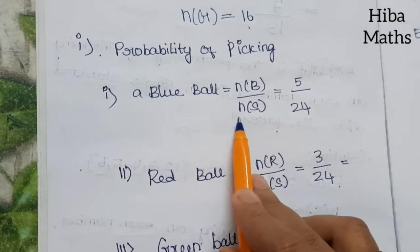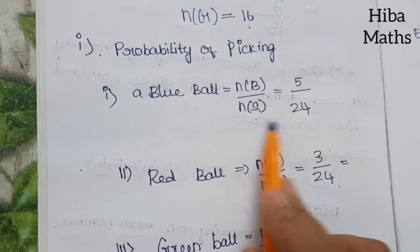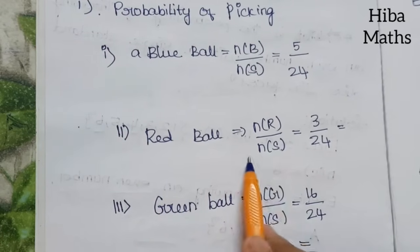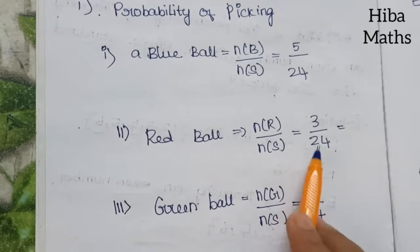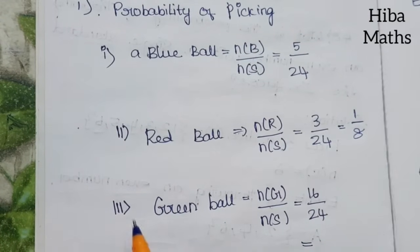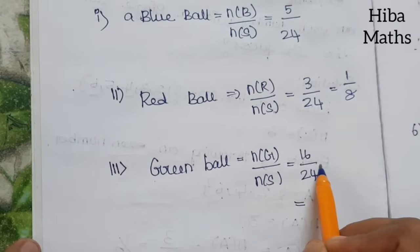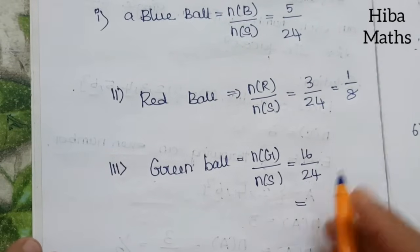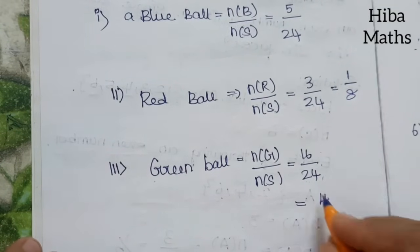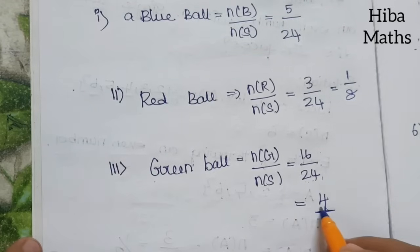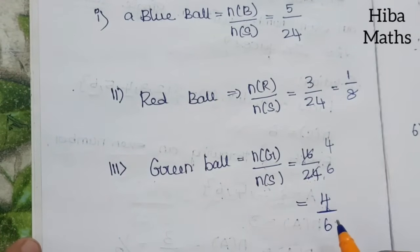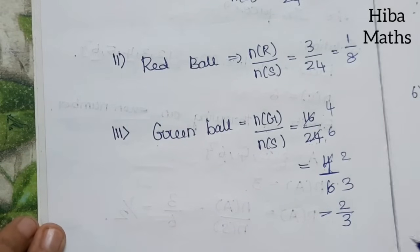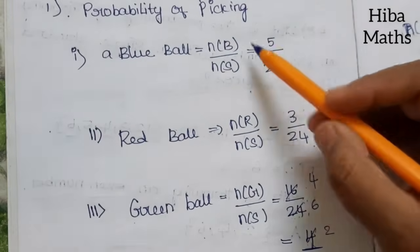Probability of picking a blue ball: n of B by n of S equals 5 by 24. Probability of picking a red ball: n of R by n of S equals 3 by 24, which simplifies to 1 by 8. Probability of picking a green ball: n of G by n of S equals 16 by 24. Dividing both by 4 gives 4 by 6, which simplifies to 2 by 3.